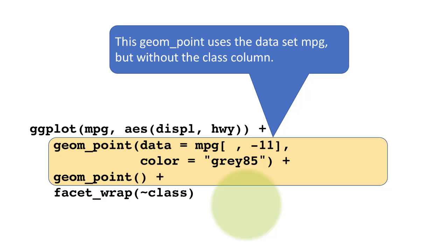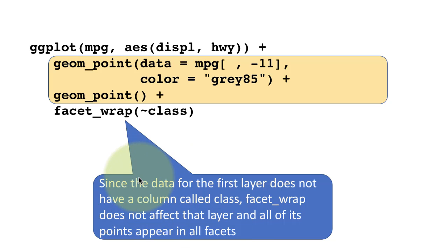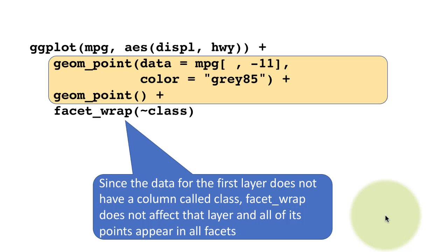So geom_point uses the data mpg set but without the class column. This geom_point is using the complete mpg data set. You can see here there are two layers of points: one layer using the complete data, another layer using the data without a particular column, and the column on which the faceting is being done. This is a neat trick that you can bring to play when you really want to highlight differences.